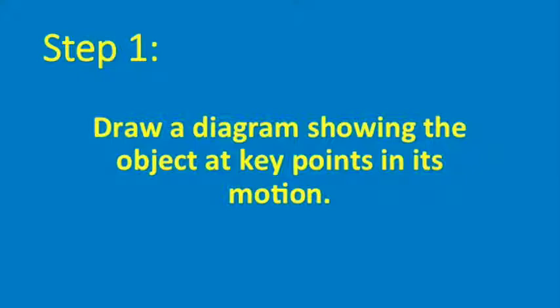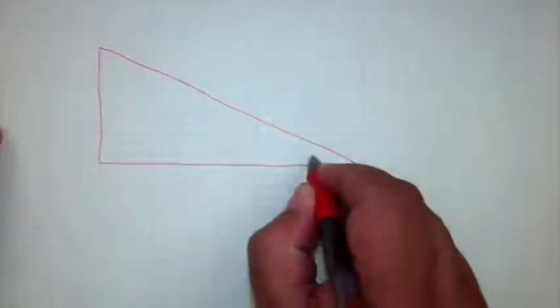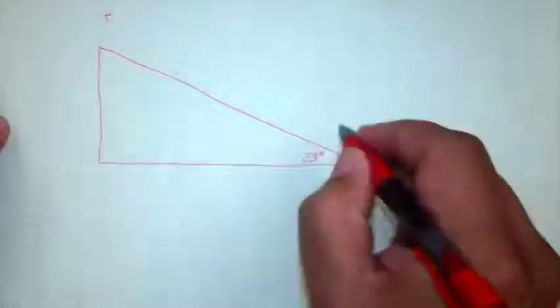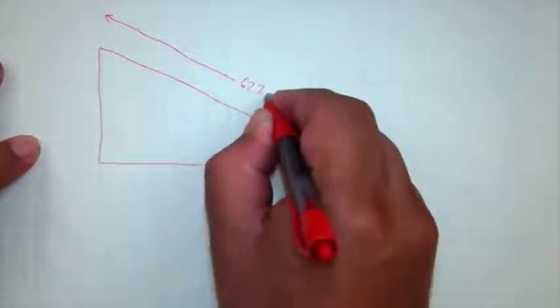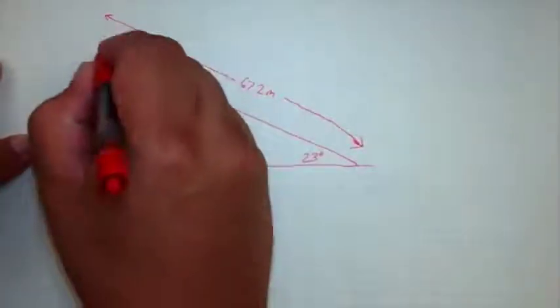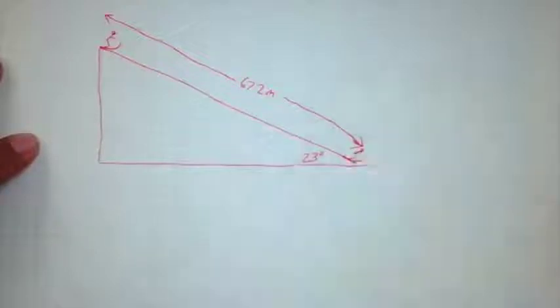When we're using energy methods, the first step is, as it is in so many other cases, to begin by drawing a diagram of the situation, showing the object at key points in its motion. In this case, the object is the snowboarder. So we draw our incline here, 23 degrees, and we indicate the length of the incline, 67.2 meters. And then we draw our snowboarder at two key points along the track, at the top and at the bottom. That concludes step one.